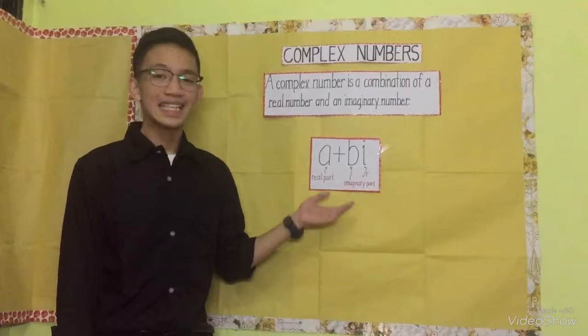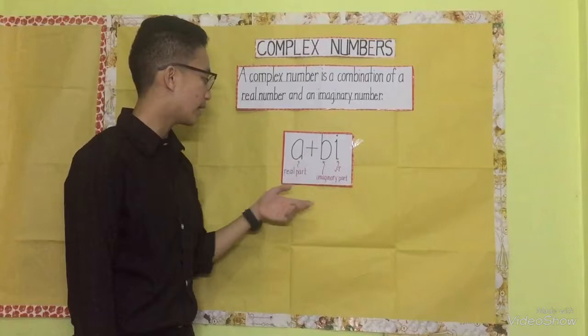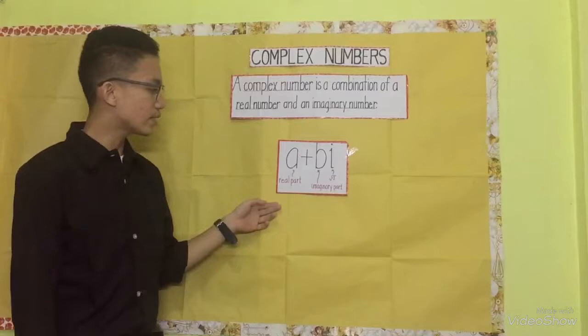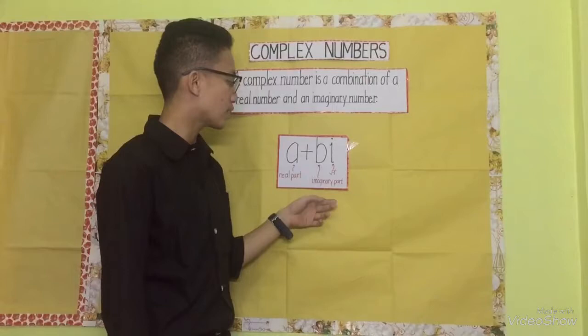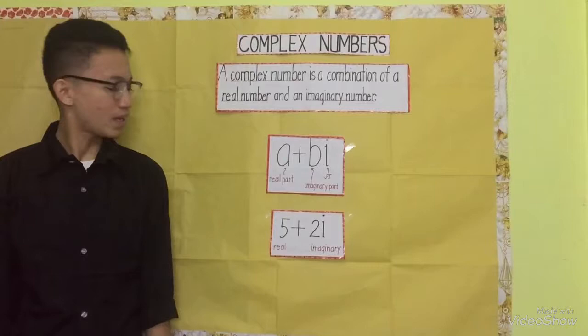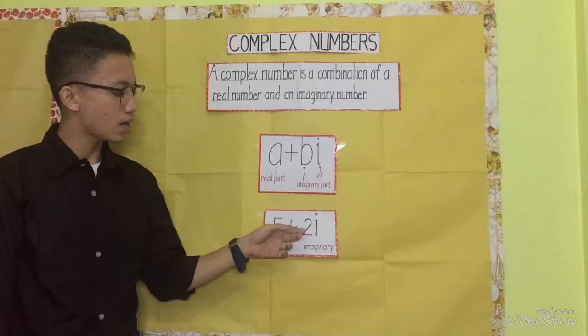Here is the standard form of a complex number: A plus Bi. A is the real part, Bi is the imaginary part, B is the coefficient of the imaginary number, while i stands for the square root of negative 1. For example, 5 plus 2i — 5 is the real part and 2i is the imaginary part.